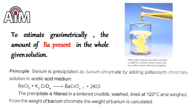Barium chloride plus potassium chromate gives barium chromate plus potassium chloride. The precipitate is filtered in a sintered crucible, washed, dried at 120 degrees centigrade, and weighed. From the weight of barium chromate, the weight of barium is calculated.